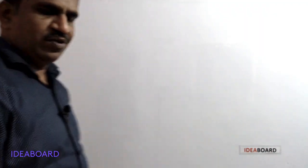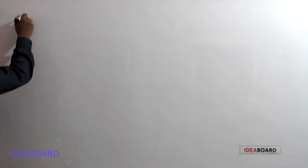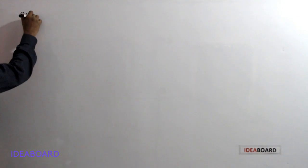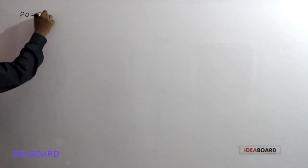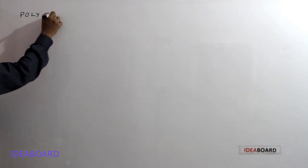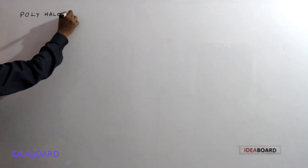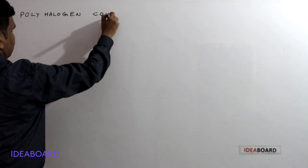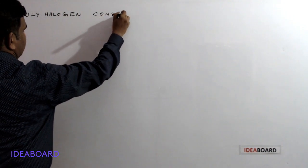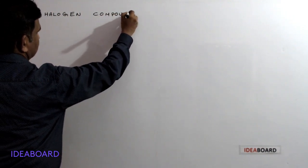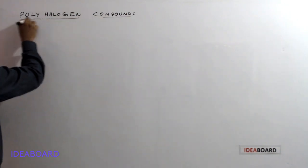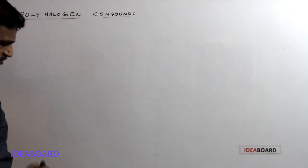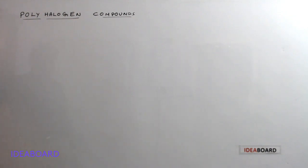Today we will discuss polyhalogen compounds. Polyhalogen compounds means compounds containing more than one halogen atom.